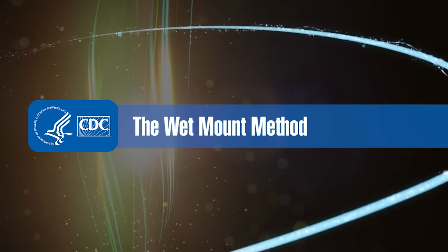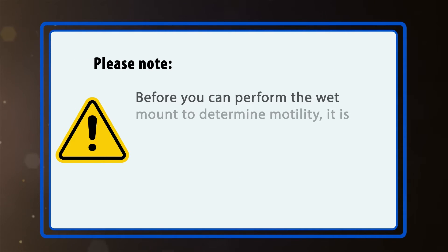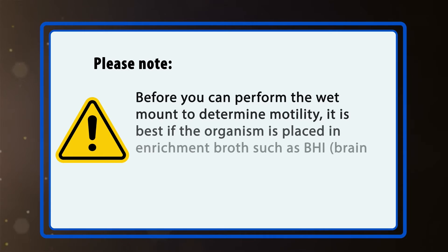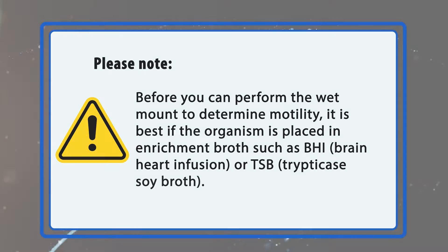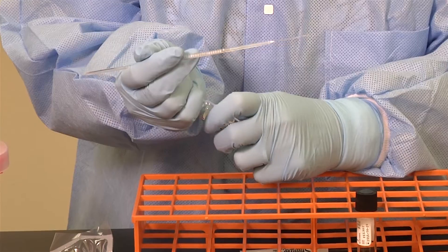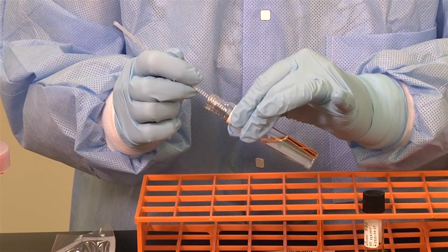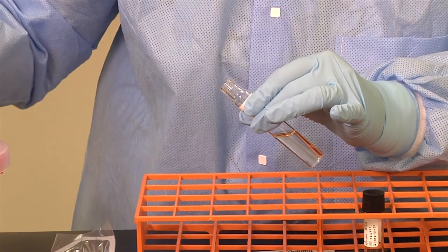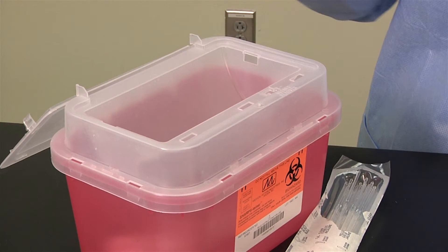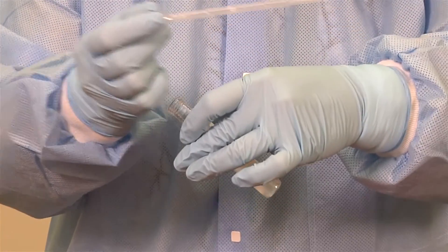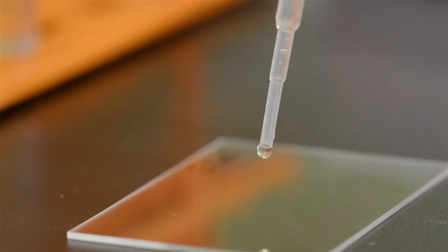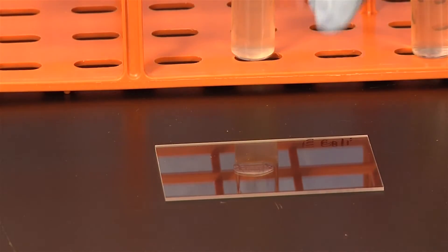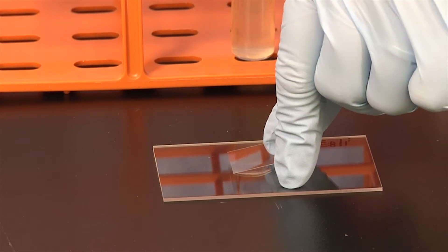Wet mount procedure. Before you perform the wet mount to determine motility, it is best if the organism is placed in an enrichment broth such as BHI (brain heart infusion) or TSB (trypticase soy broth). Using a plastic loop, isolated colonies are picked from a blood agar plate and transferred to a labeled tube of BHI broth. The loop is then discarded into the sharps container. Using a sterile Pasteur pipette, remove a small amount of broth and place a single drop on the center of a large glass slide. Place a glass cover slip over the sample and allow the organisms to settle for a minute.